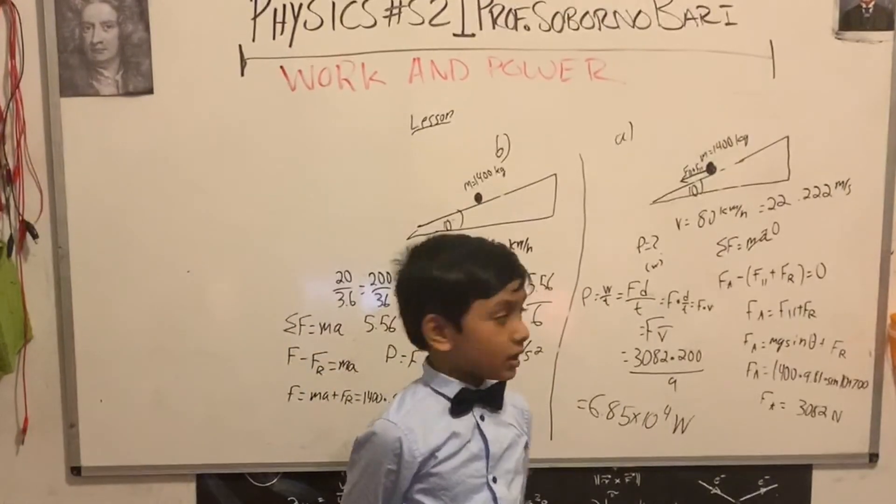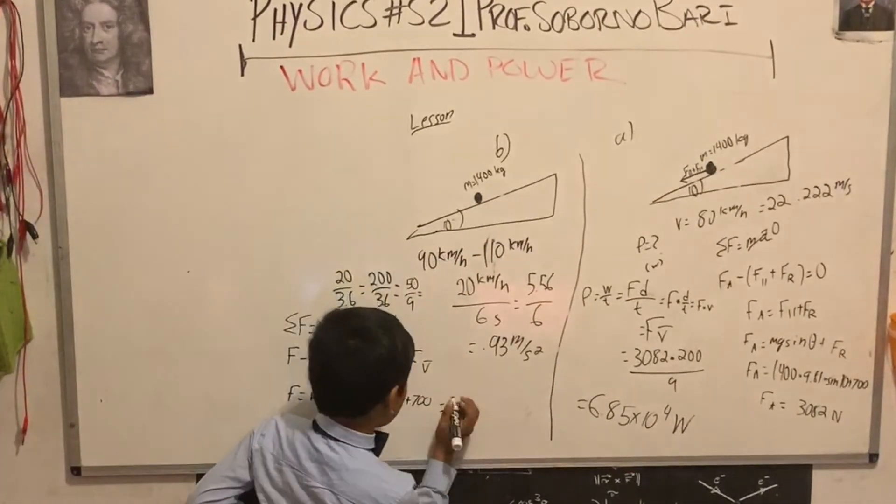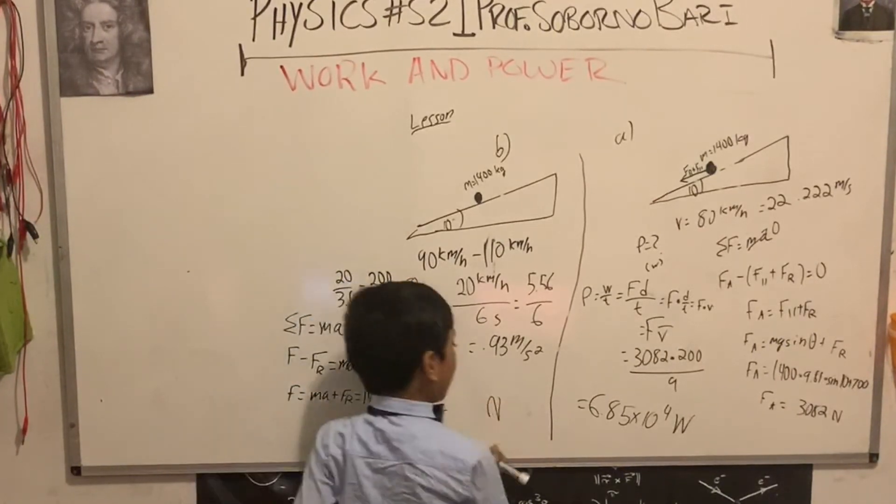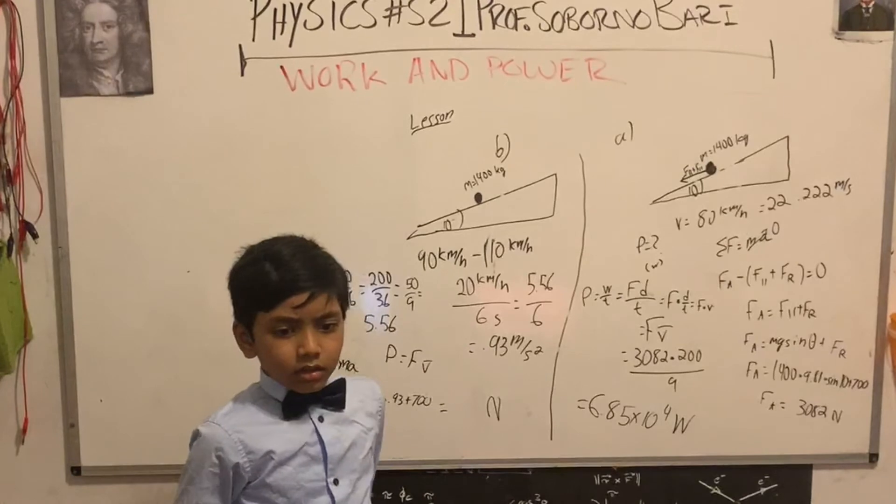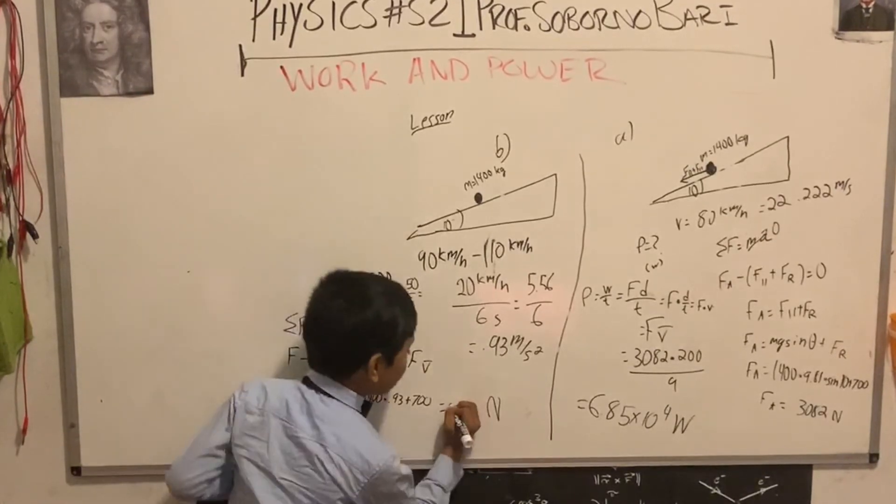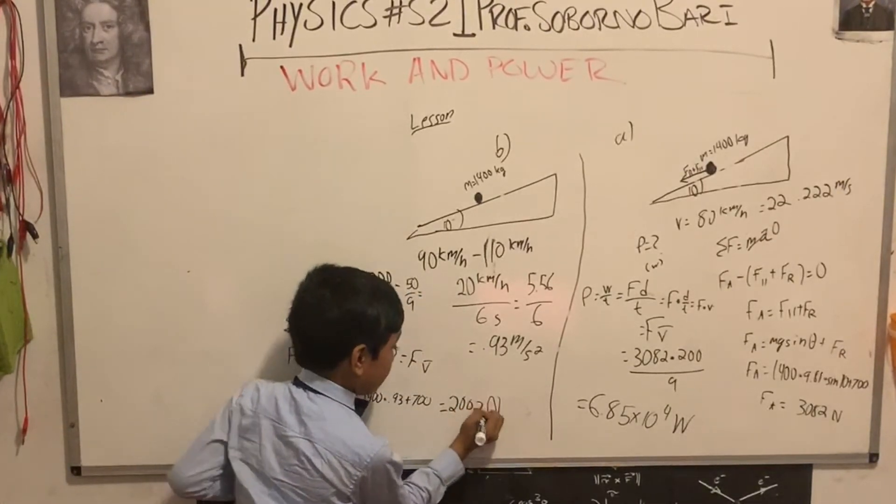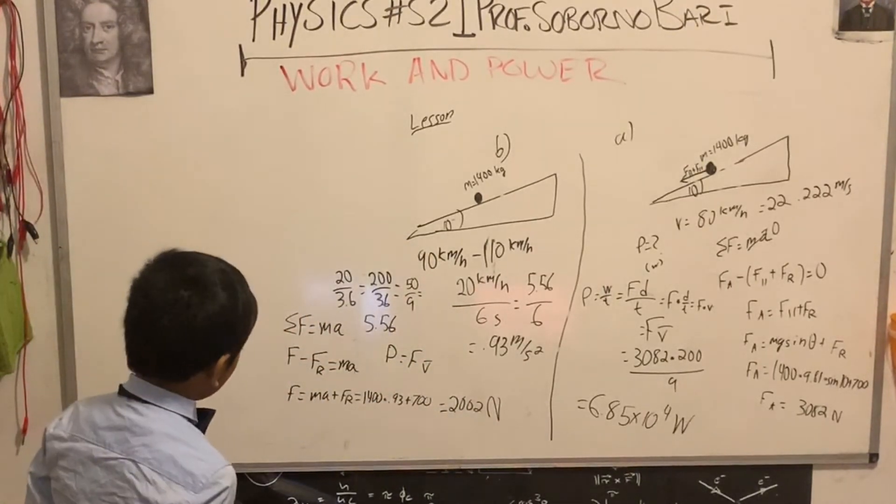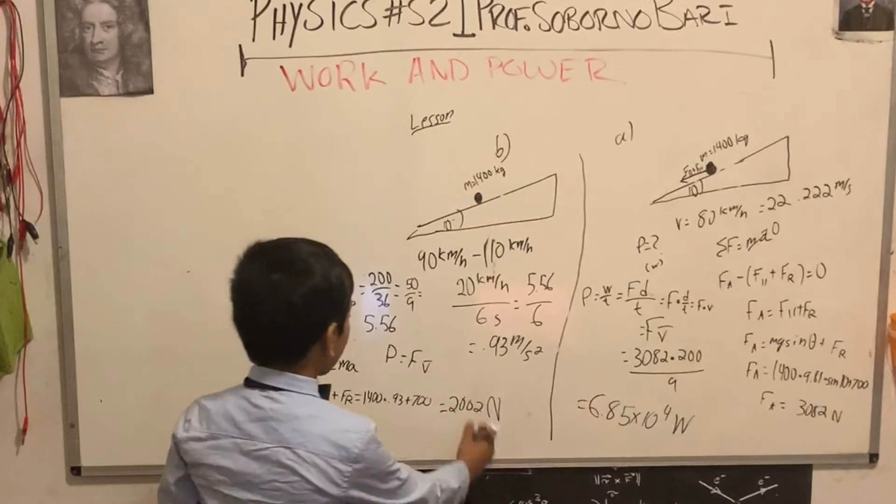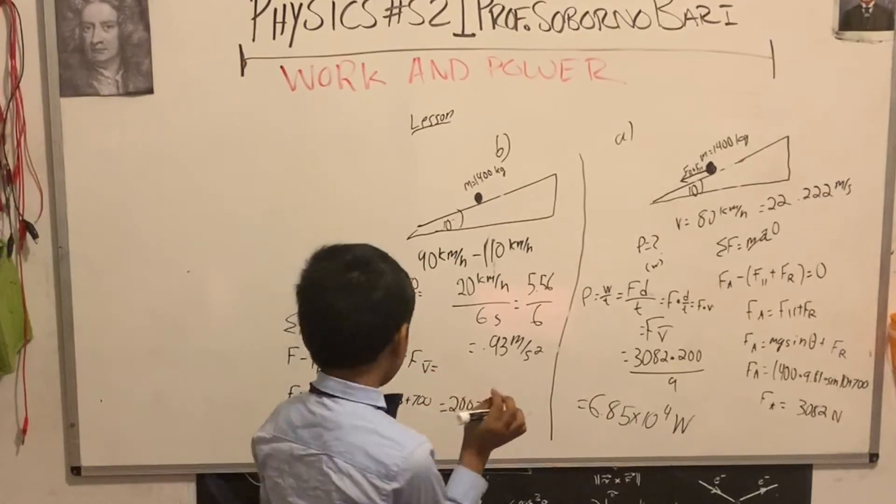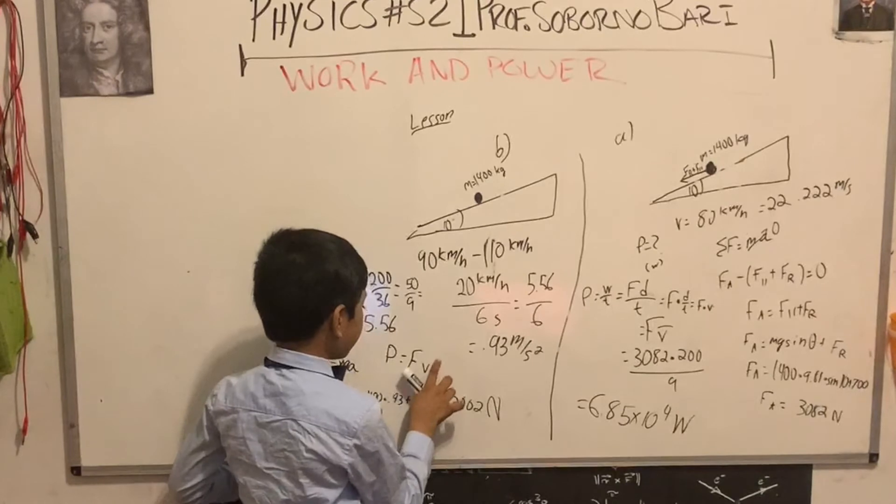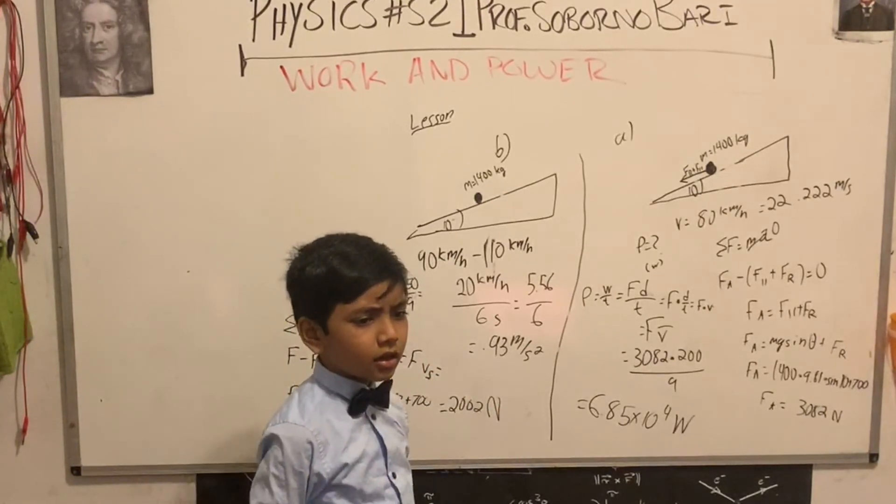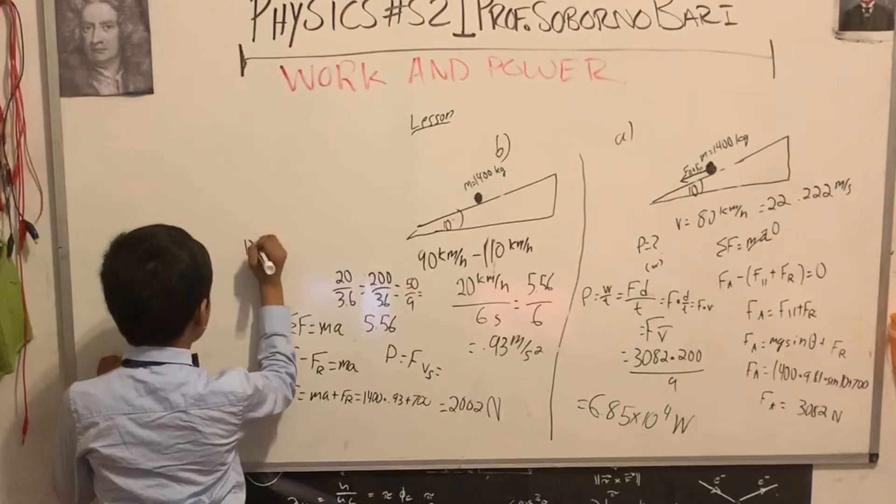What do I have to find? We have to find 1400 times 0.93 plus 700. So, 2002. And now we know F, we want to multiply by v. But this isn't just v, we have to convert 110 kilometers per hour. So 110, basically 1100 over 36.